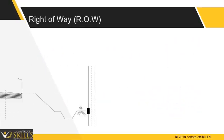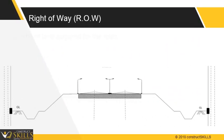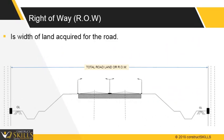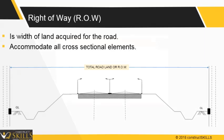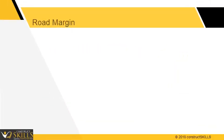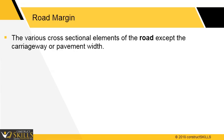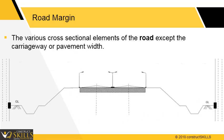Right of way: it is the width of land acquired for the road. It should accommodate all the components of road section. Road margin: the various cross-sectional elements of the road, except the carriageway or pavement width. Service road, shoulders, and footpaths are part of the road margin.